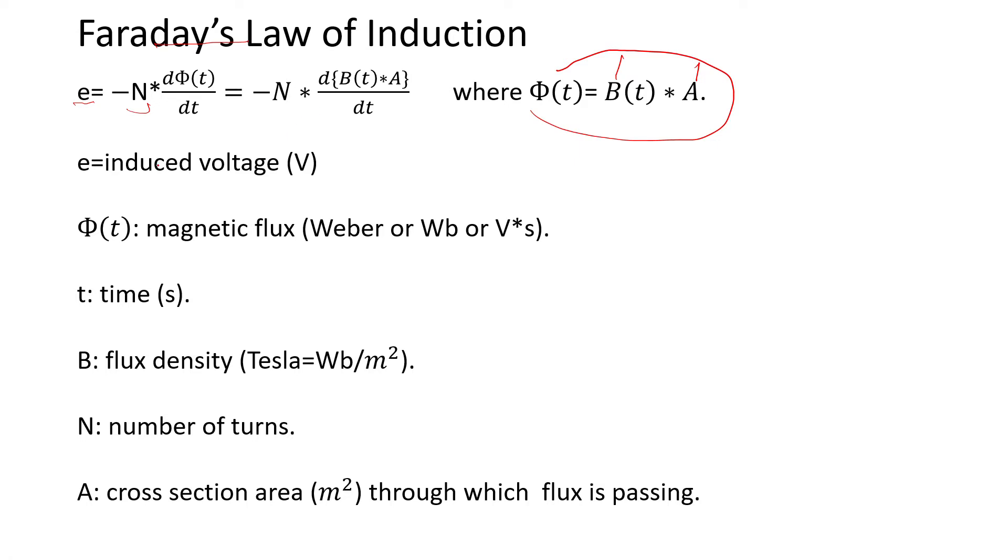E is induced voltage, Φ is magnetic flux in Weber or volt-seconds, t is time in seconds, B is flux density in Tesla, N is the number of turns, and A is the cross-section area in meters squared through which flux is passing.